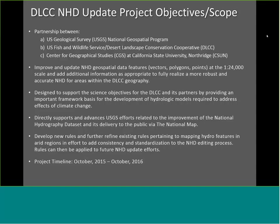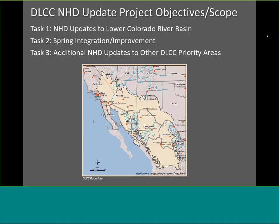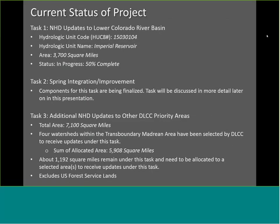The project started in October of last year, and it's currently set to conclude October of this year. The DLCC boundary, their main area of interest, gives context since we'll be talking about the areas where we are updating the NHD within this greater geography. We have three main tasks under this project. Tasks one and three are very similar to each other — they mainly deal with bringing comprehensive updates to certain key areas within the DLCC area. Task two is a spring integration and improvement task.